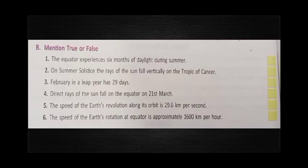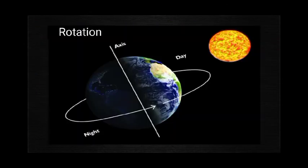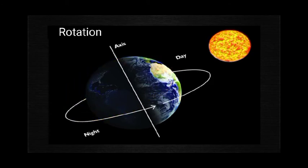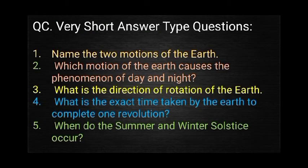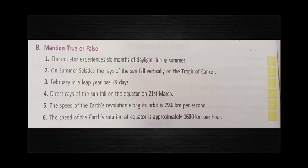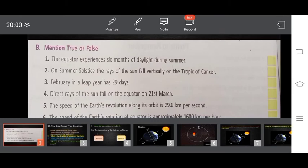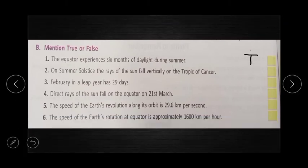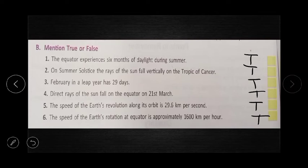Question B6: The speed of the Earth's rotation at the equator is approximately 1600 km per hour. The answer is correct. At the equator, the Earth rotates at 1600 km per hour. As shown in the diagram, at 45 degrees latitude the rotation speed is 1200 km per hour. So all six answers for section B — questions 1 through 6 — are all true.